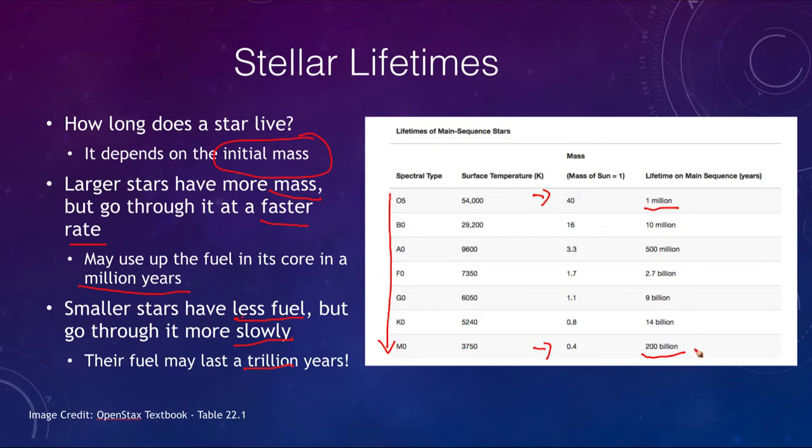Now, if we think about that 200 billion years, our universe is only about 14 billion years old. Meaning that any star of this type that ever formed in the universe is still present. There has not been enough time for even one of these stars to have gone through their life in the entire history of the universe. So every M zero star that ever formed is still around. No O five stars are around that formed more than a million years ago. So it really depends on the mass of the star.